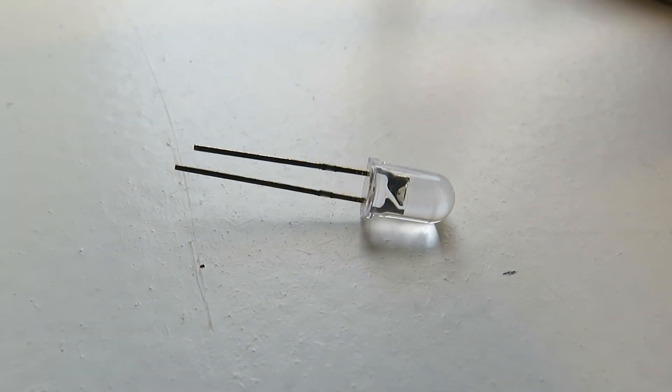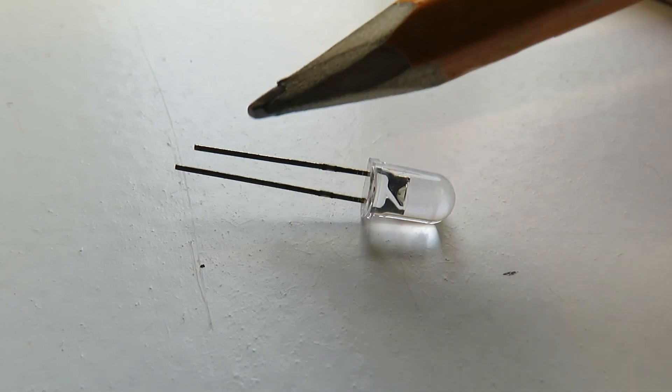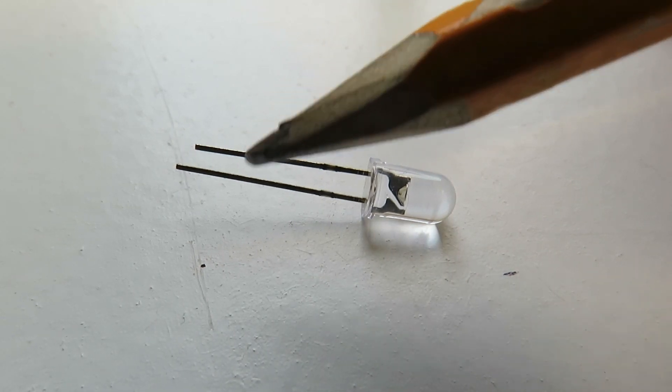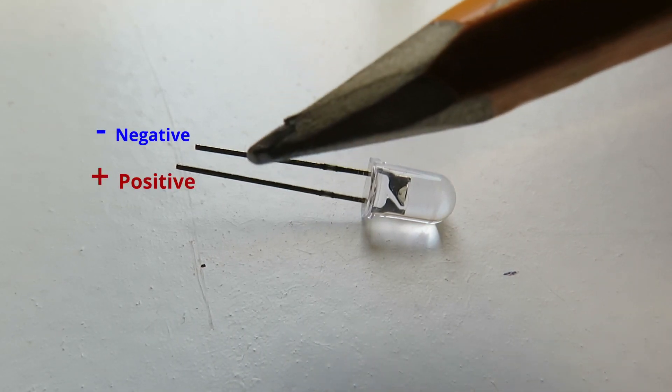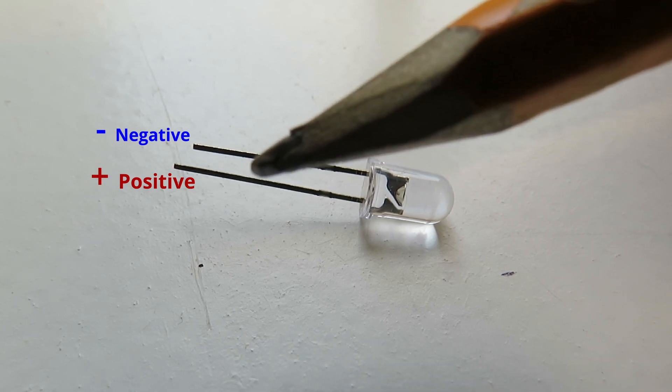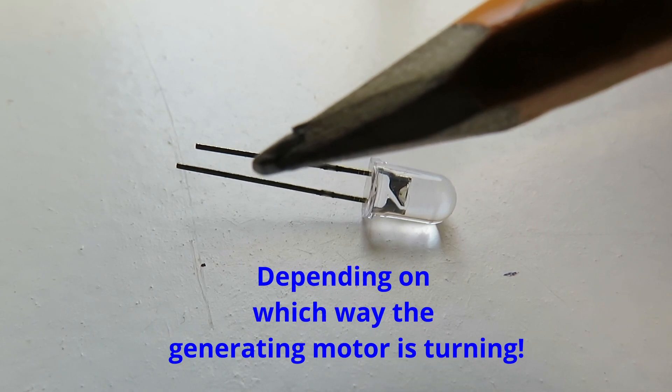Now if you're unsure as to which way round the LED goes, you'll see that there's two legs on it and one is longer than the other. The longer one is the positive or the anode and that will connect to the red cable or the positive coming off the generating motor.